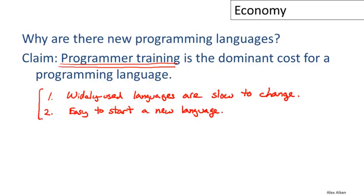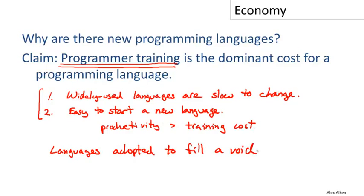And there's a tension between these two things. Okay. So when is a programmer going to choose between a widely used existing language that perhaps doesn't change very quickly and a brand new language? Well, they're going to choose it if the productivity, if their productivity now exceeds the training cost. So if they perceive that by spending a little bit of time and money to learn this new language, they're going to be much more productive over a relatively short period of time, then they're going to make the switch. Okay. And so when is this likely to happen? Well, putting this all together, languages are most likely to be adopted to fill a void.